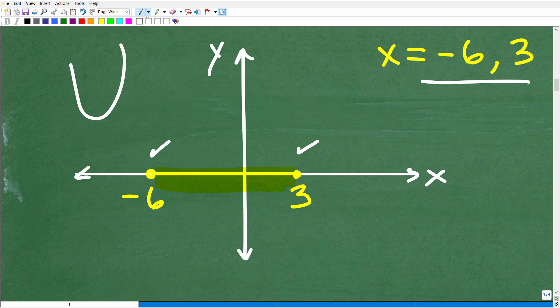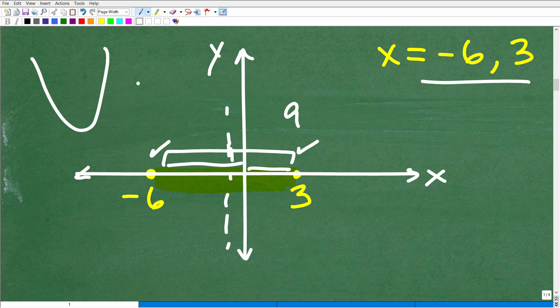Now, without even finding the vertex and all that other stuff, I know that my parabola, my happy parabola is going to cross through these two points. So now here, from negative six to three, what's the distance between negative six to three? So just to kind of do some mental math here, right? So we have three here and six there. We're talking about nine, right? So between nine, we want to split that distance in half.